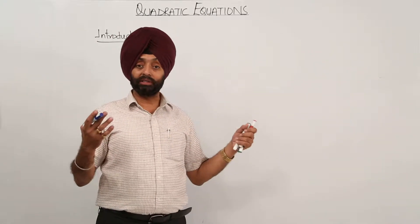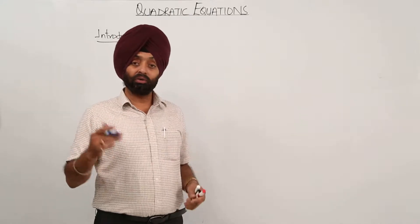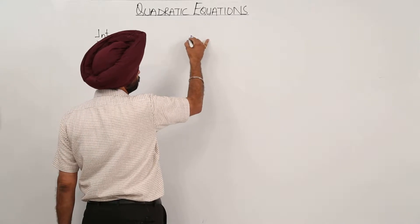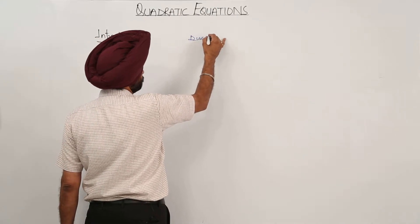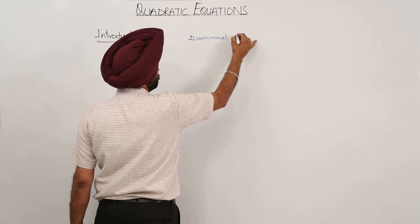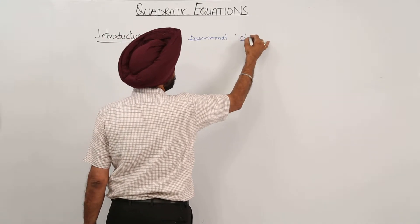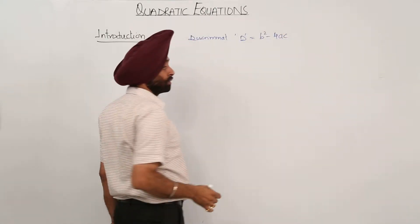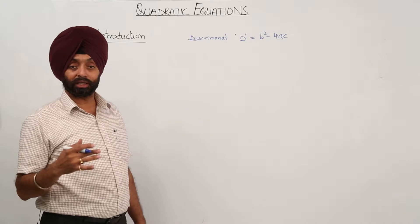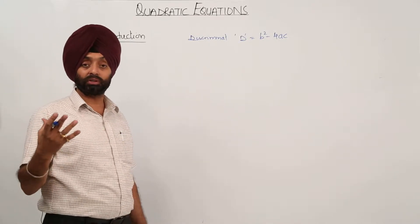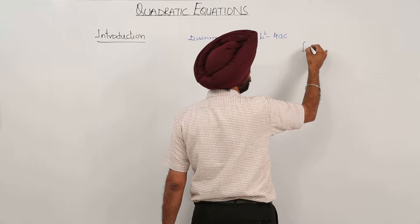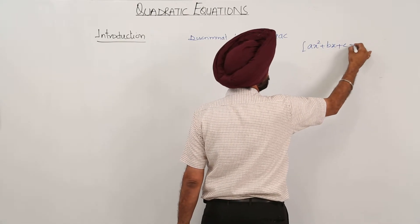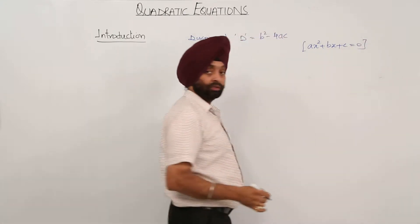You are knowing what basically the nature of the roots are. Now what we have done in class 10th? We have just written discriminant, that is D is equal to b square minus 4ac, where a, b and c are the parts or the coefficients for the quadratic equation. So we can write it ax square plus bx plus c is equal to 0, a quadratic equation.